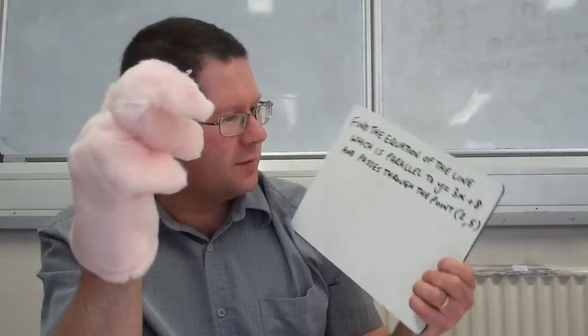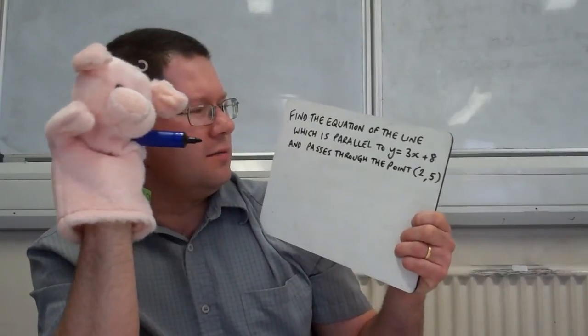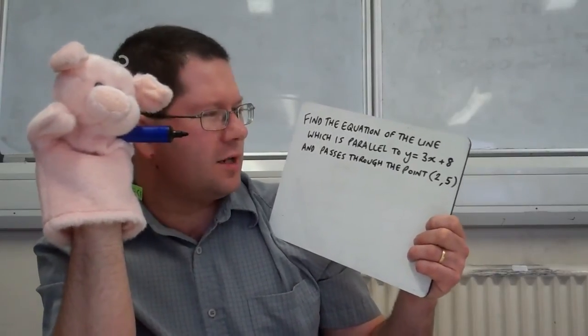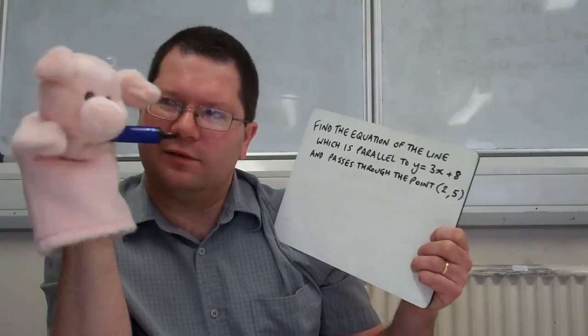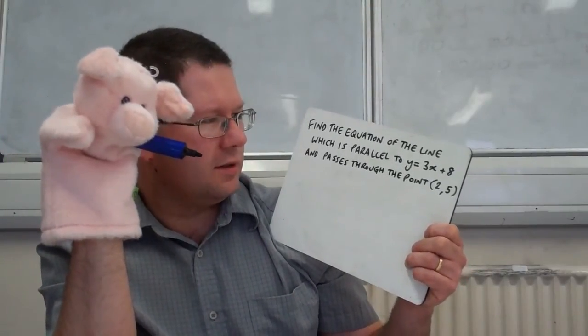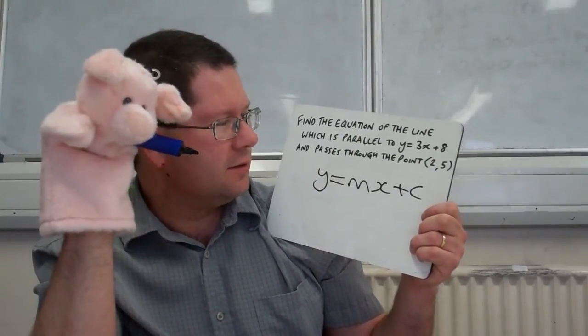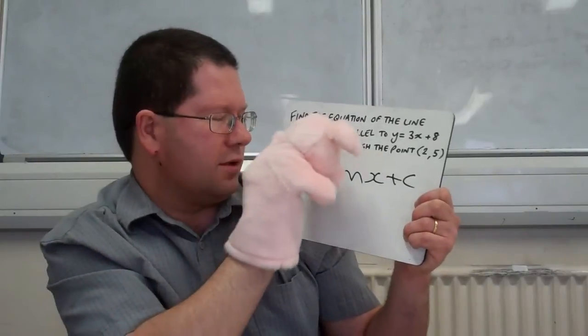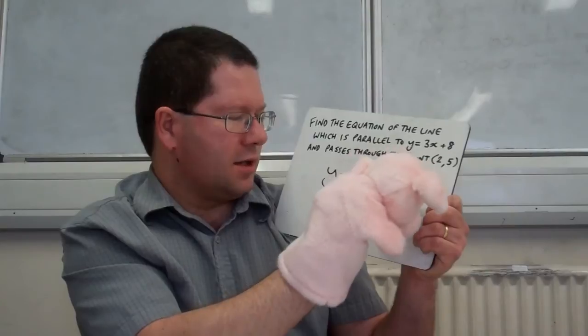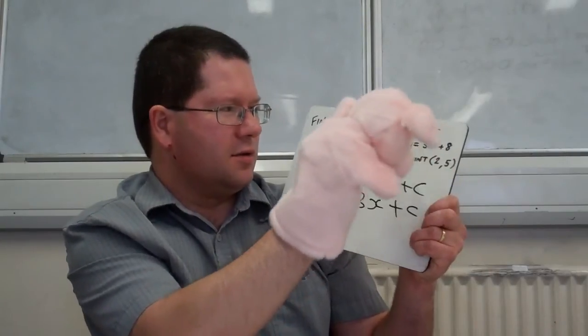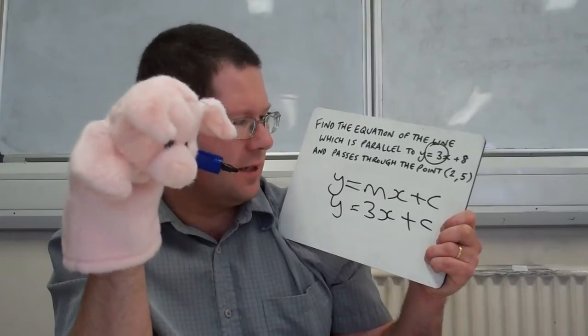OK, so you've got one final question for us. It's quite long, isn't it? So, what does it say? Find the equation of the line which is parallel to y equals 3x plus 8 and passes through the point 2, 5. OK, so how would you do that? So, you're using y equals mx plus c. Good, so, OK, and then... Oh, right. Yeah, yeah, yeah. So, you're using that same number there, but you still don't know what the y-intercept is. OK, that's good. And then what?